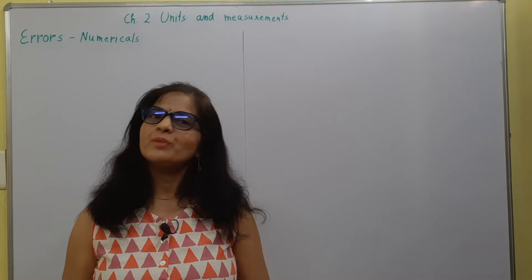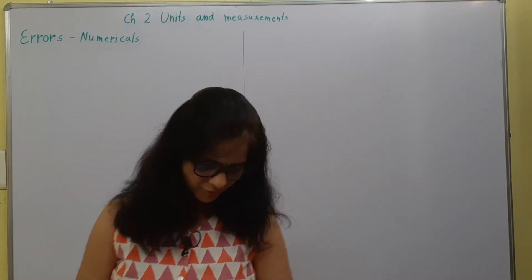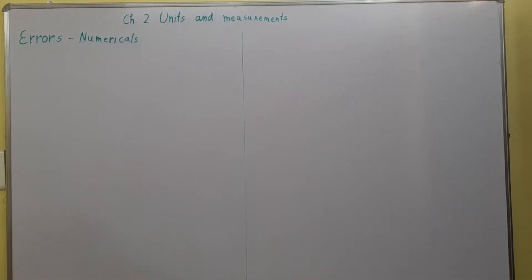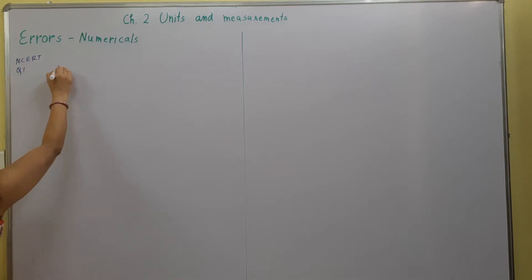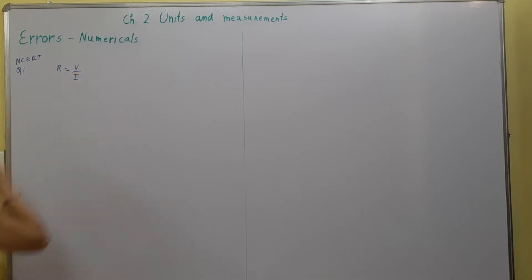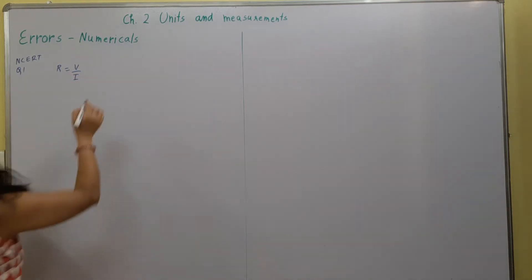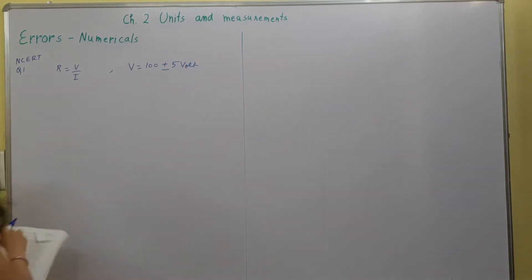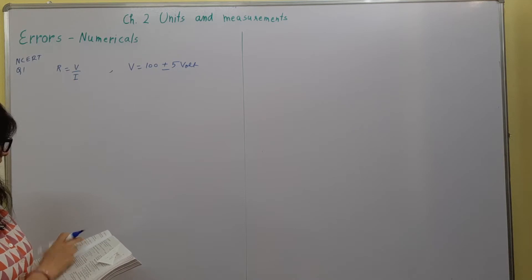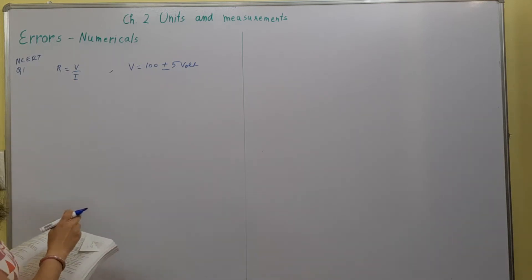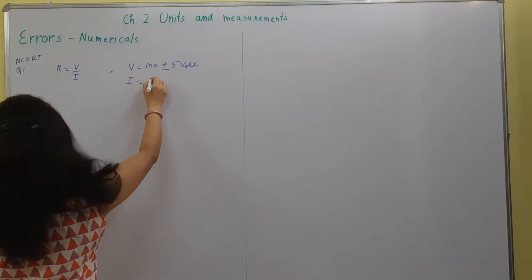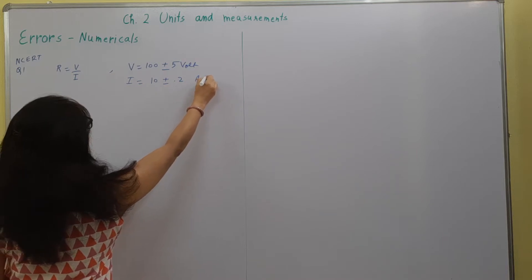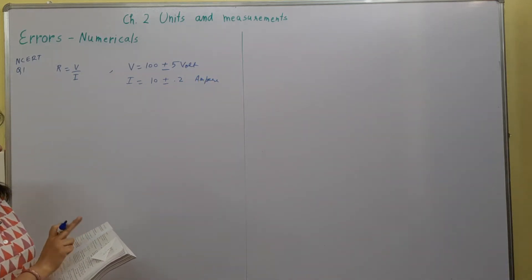Hello everyone. Today we are going to do some numericals based on the concept of errors. Let's take the first question. It says that the resistance R is equal to V upon I, where V is equal to 100 plus minus 5 volt, and current is equal to 10 plus minus 0.2 ampere. Find the percentage error in R.